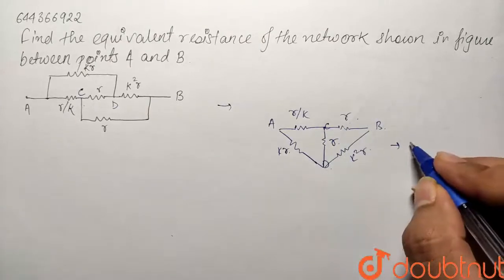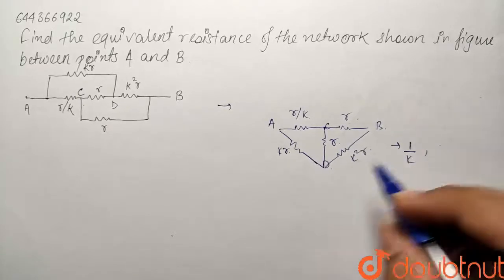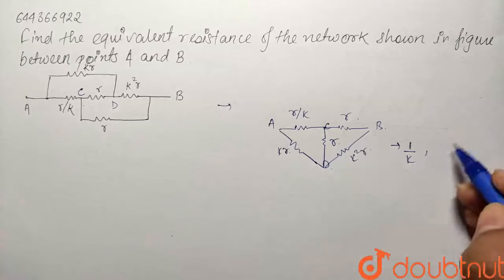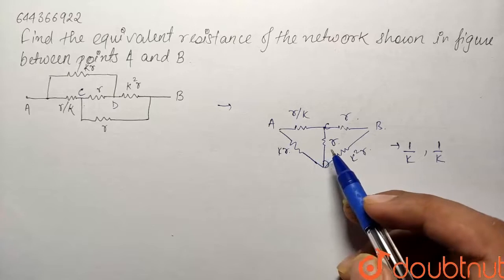So the ratio of these two resistances is nothing but 1 by K and similarly, the ratio of these two resistances comes out to be again 1 by K. So this is a balanced Wheatstone bridge.